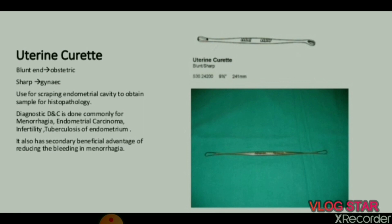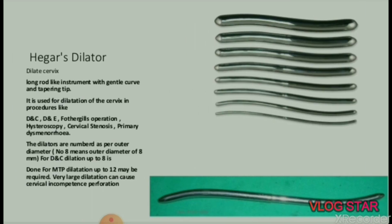Uterine curette: if it has a blunt end, it is used in obstetrics; if it has a sharp end, it is used in gynecology. Used for scraping the endometrial cavity to obtain a sample for histopathology. Diagnostic D&C is done commonly for menorrhagia, endometrial carcinoma, infertility, and tuberculosis of endometrium. It also has a secondary beneficial advantage of reducing bleeding in menorrhagia.